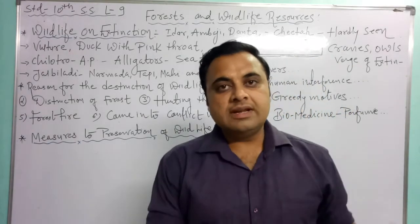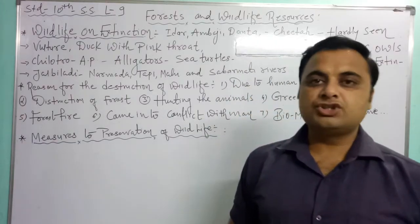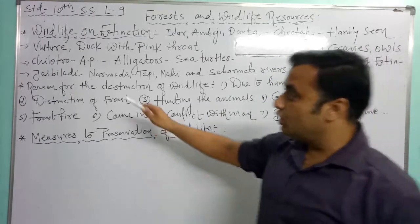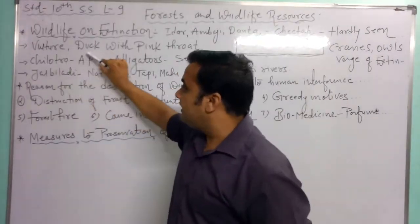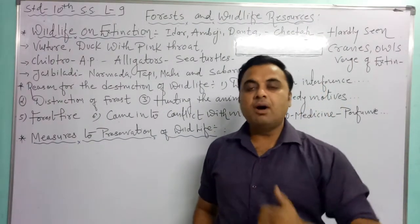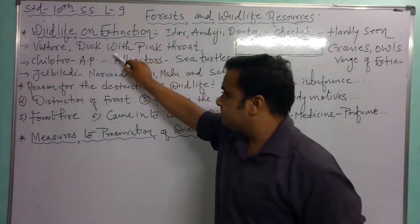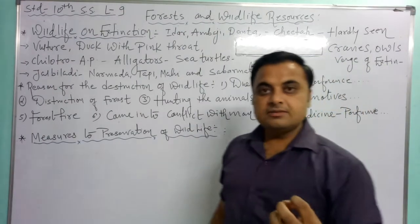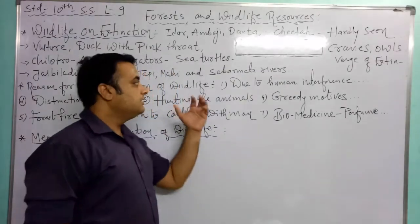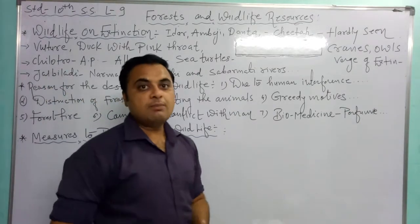These birds and animals are all standing on the brink of extinction. The chilotro bird, which is very largely seen in the northeast, particularly in Arunachal Pradesh state, is also now on the verge of extinction. Alligators and crocodiles that can be seen in the freshwater rivers of India are also on the verge of extinction.